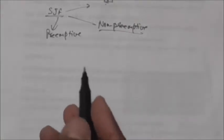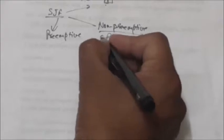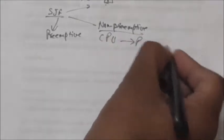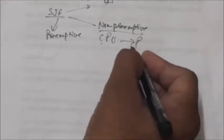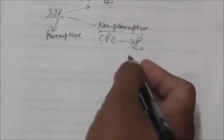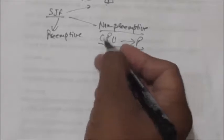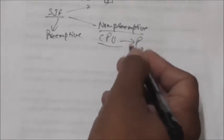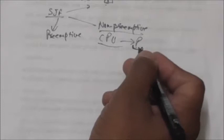When the Shortest Job First scheduling algorithm is non-preemptive, once the CPU is allocated to a process, that CPU is not taken away from the process until the process completes its CPU burst.